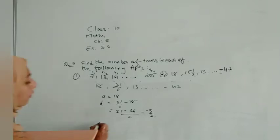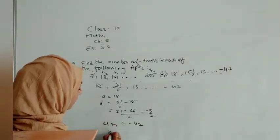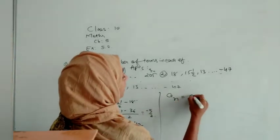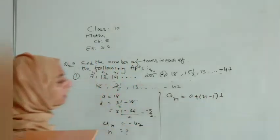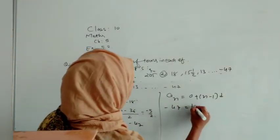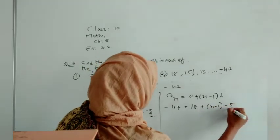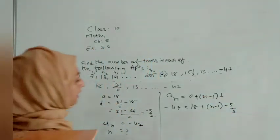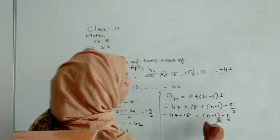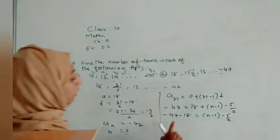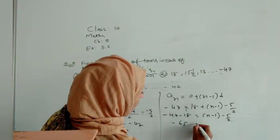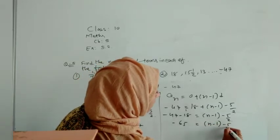Our difference is in minus. Let us do what we can do. An we have as minus 47 and n we are not knowing, so n is question mark. We have only one equation right now: an is equal to a plus (n minus 1) times d. Let us substitute all the values over there. That is minus 47. A is 18 and (n minus 1) we are not knowing. Difference we got as minus 5 by 2. Let us call it: minus 47 minus 18, and that is equal to (n minus 1) times minus 5 by 2. They both are in multiply.